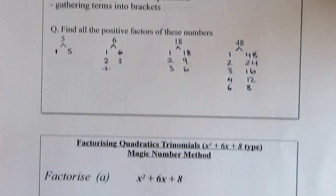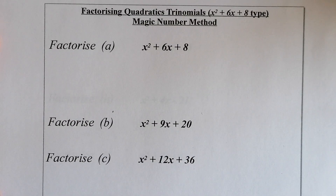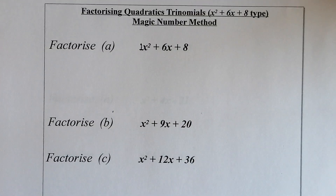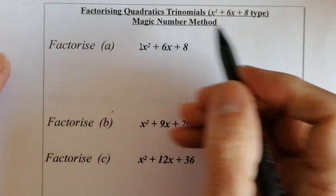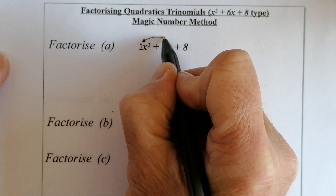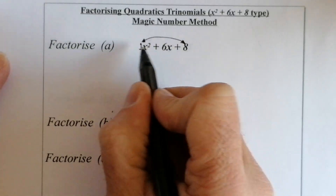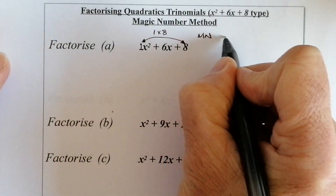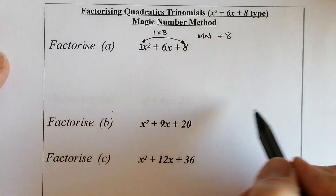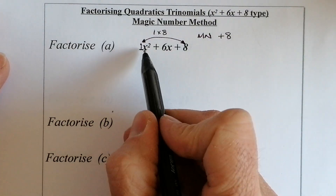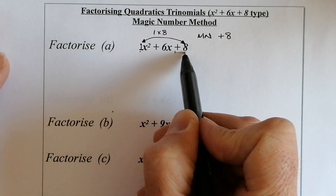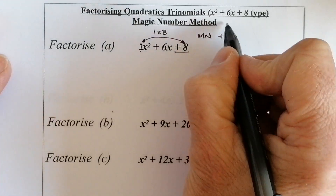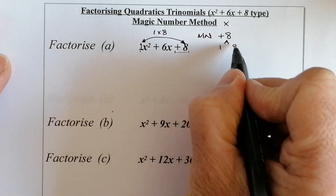Let's get on to the first factorising question. The number in front of x squared is 1. The magic number is always the number at the front multiplied by the number at the end — so 1 times 8 gives a magic number of positive 8. With a unitary x squared coefficient, the magic number is simply the constant at the end. So I look at all the factors of 8: 1 and 8, 2 and 4.